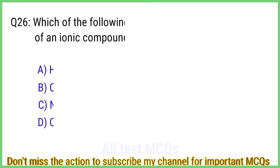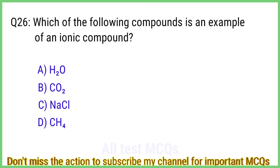Question number 26. Which of the following compounds is an example of an ionic compound? The right answer is option C.